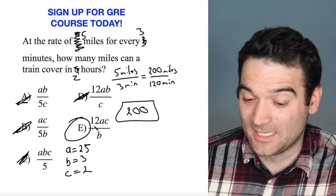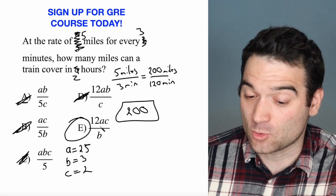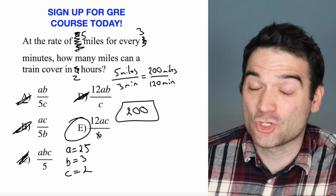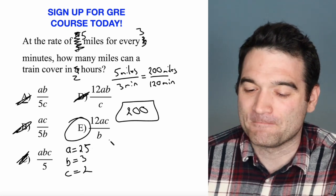But when I plug them in here, 12 times 25 times 2 divided by 3, sure enough, I get 200. Double check it on your calculator if you want to see it.